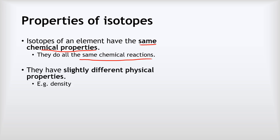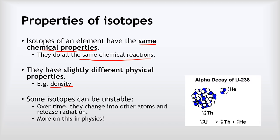However, they do have slightly different physical properties. For example, the higher isotopes of an element are more dense because they've got more neutrons in their nucleus, which just makes them that little bit more dense.